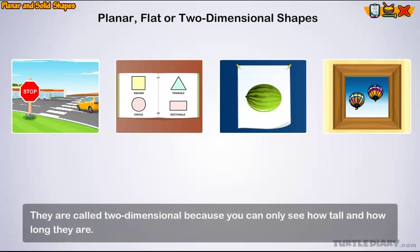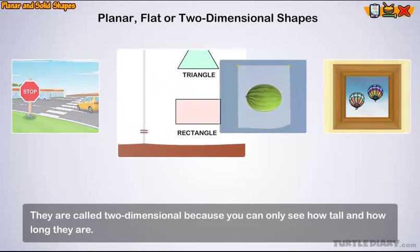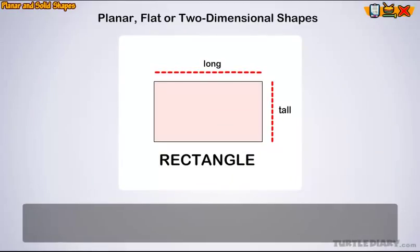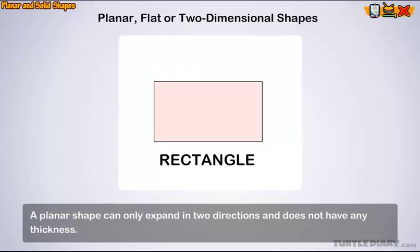They're called two-dimensional because you can only see how tall and how long they are. A planar shape can only expand in two directions and does not have any thickness.